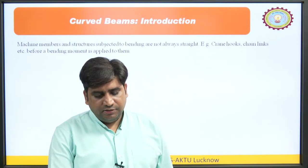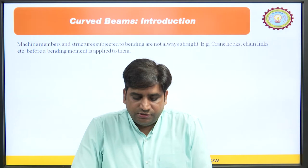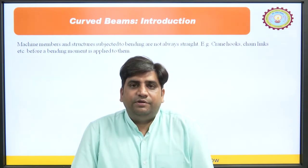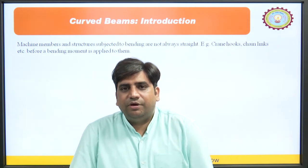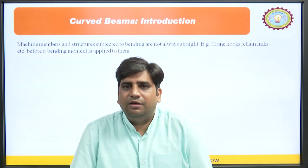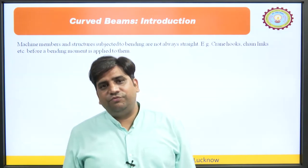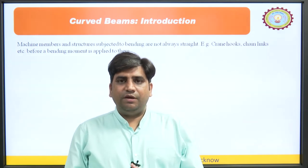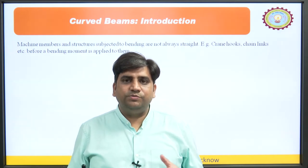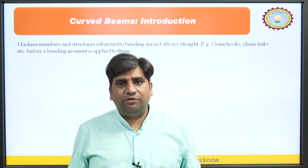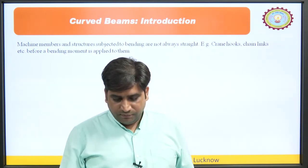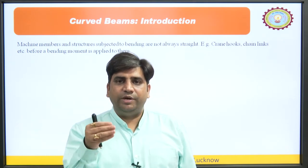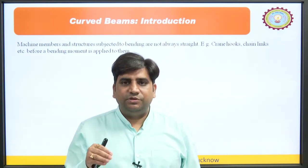As far as curved beams are concerned, machine members and structures subjected to bending are not always straight. When we think of a beam, we assume it is a straight horizontal structural member subjected to loading, but that is not the only condition. In practical situations we may have beams which are not exactly straight — they may have some curved shape. For example, crane hooks have a standard curved shape, and when we apply a force or moment, bending occurs in those beams.